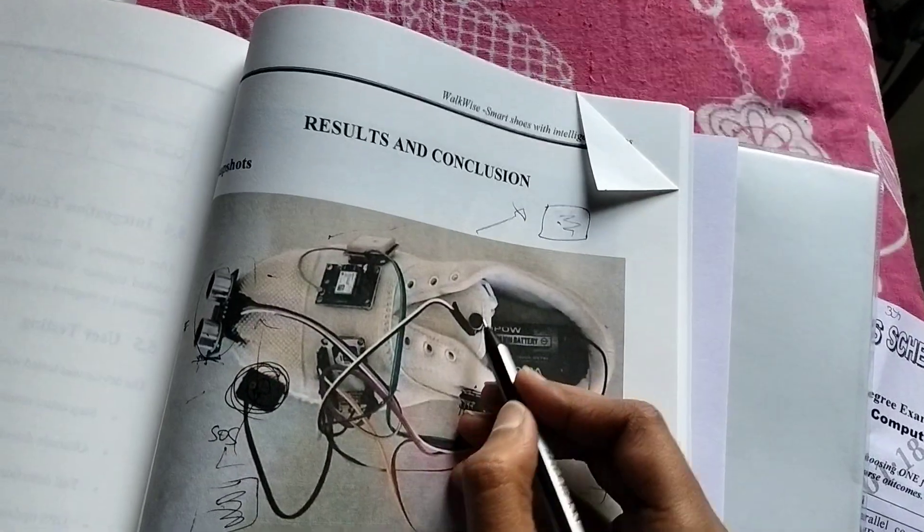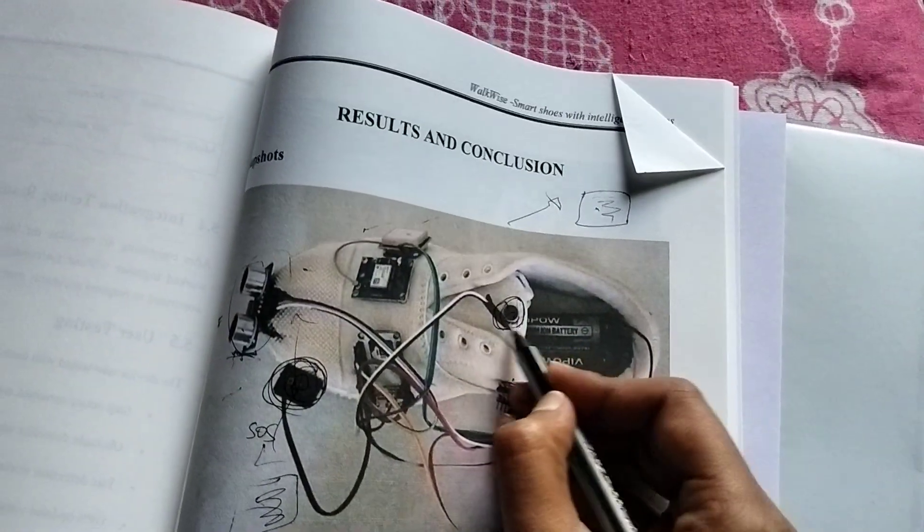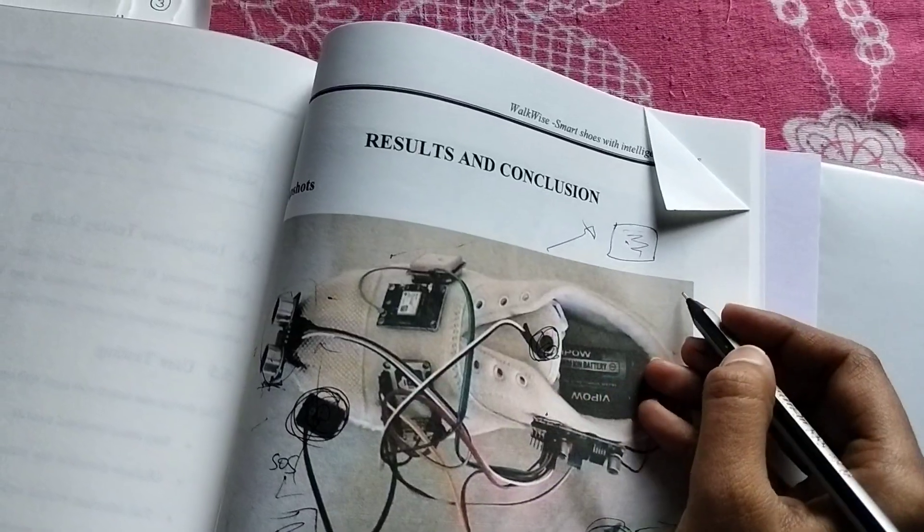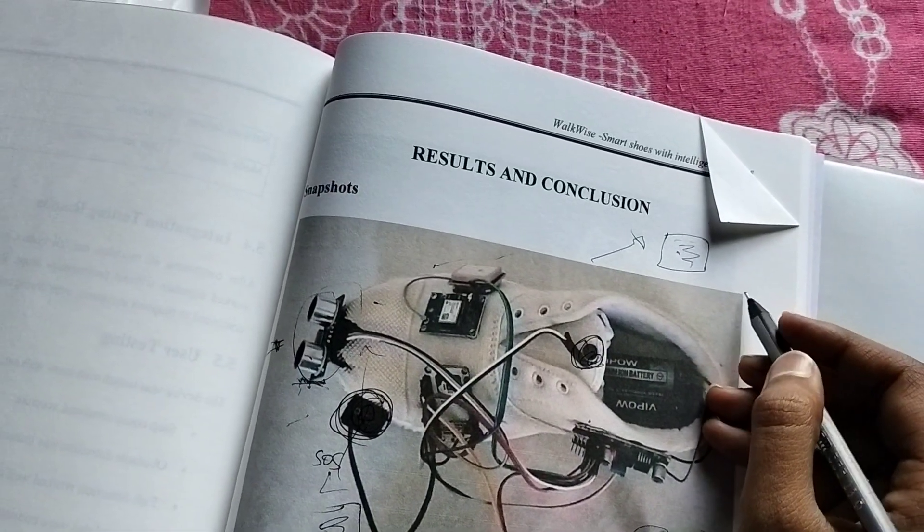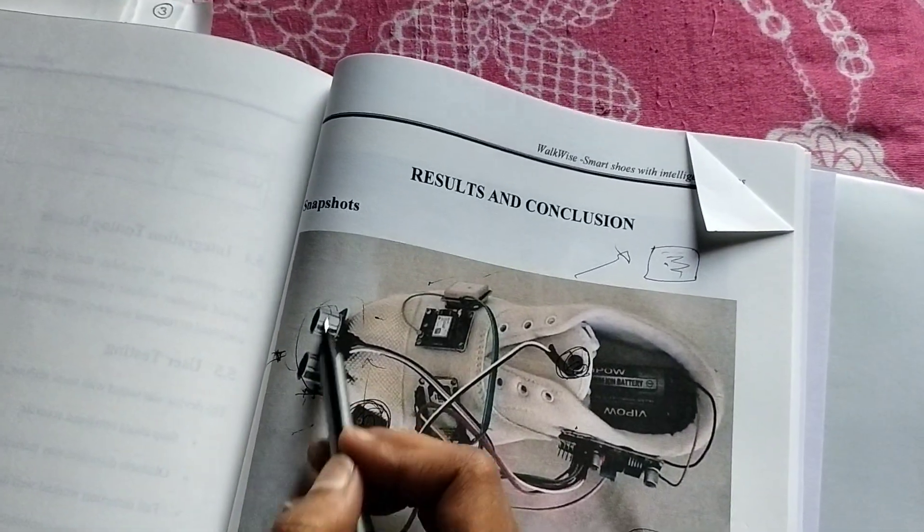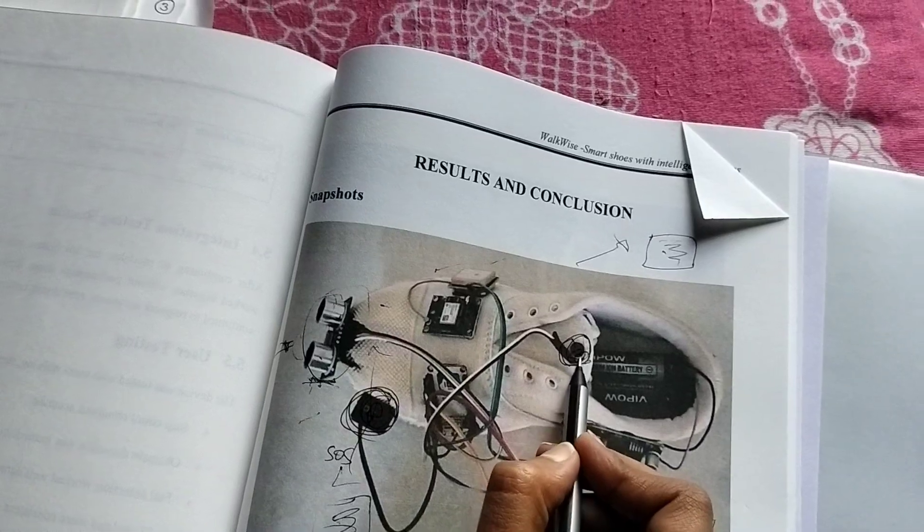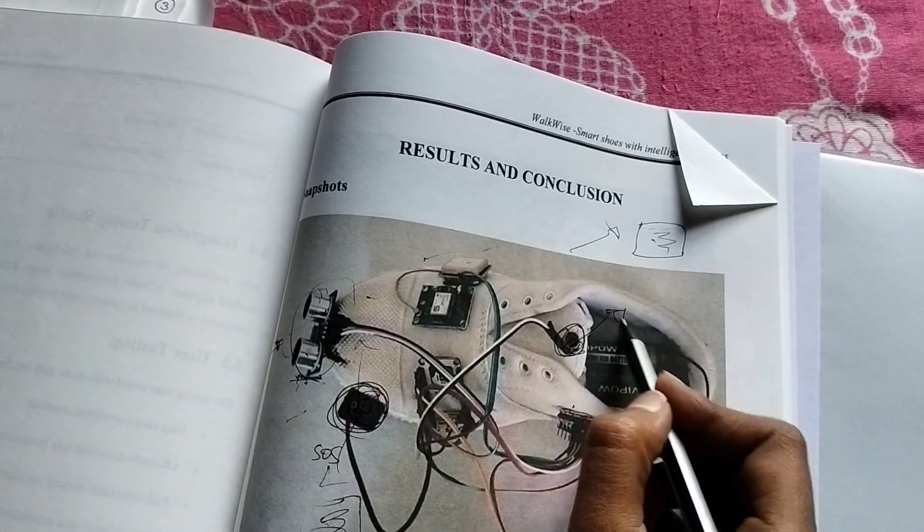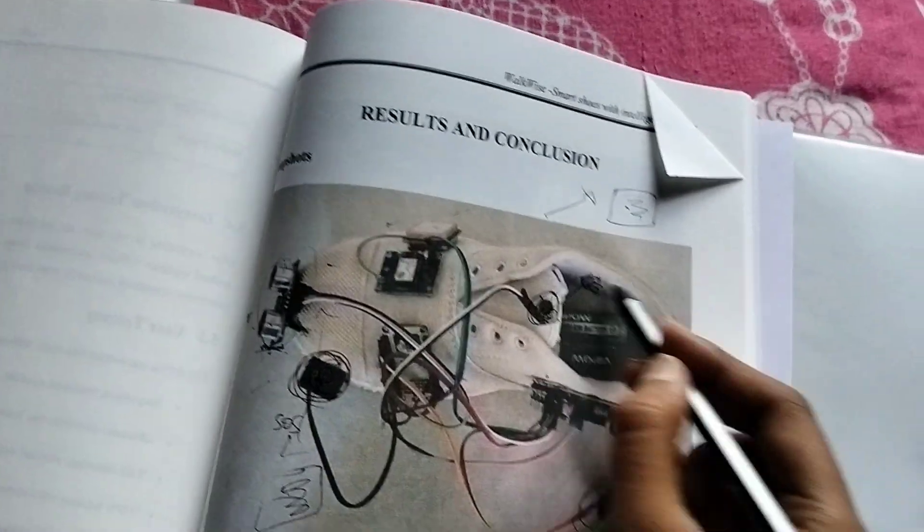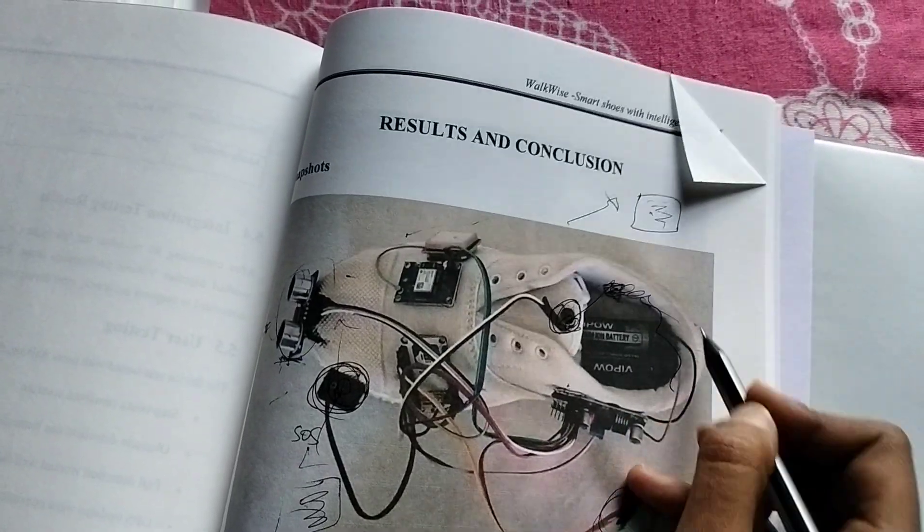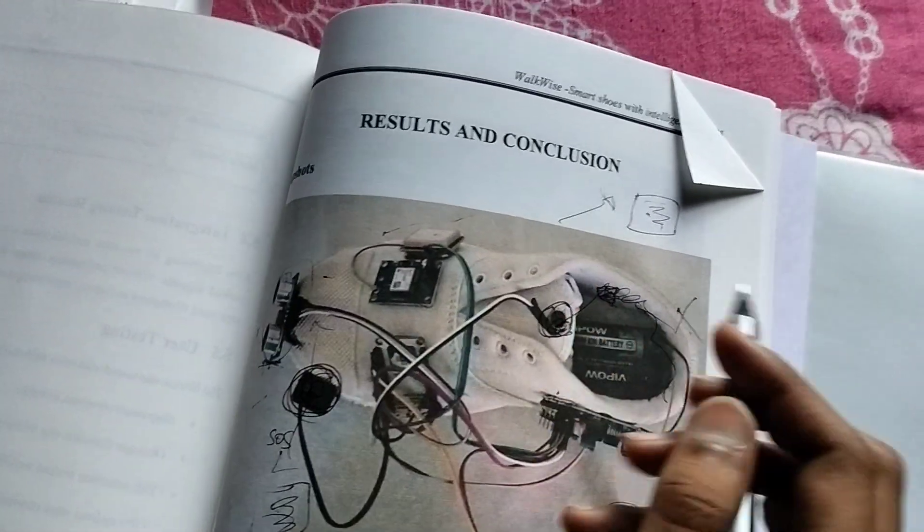And then this is a vibration motor, bro. For this obstacle detection, this vibration motor will make a sense to our leg. It will vibrate, then we'll know - okay stop, stop, don't go that way.